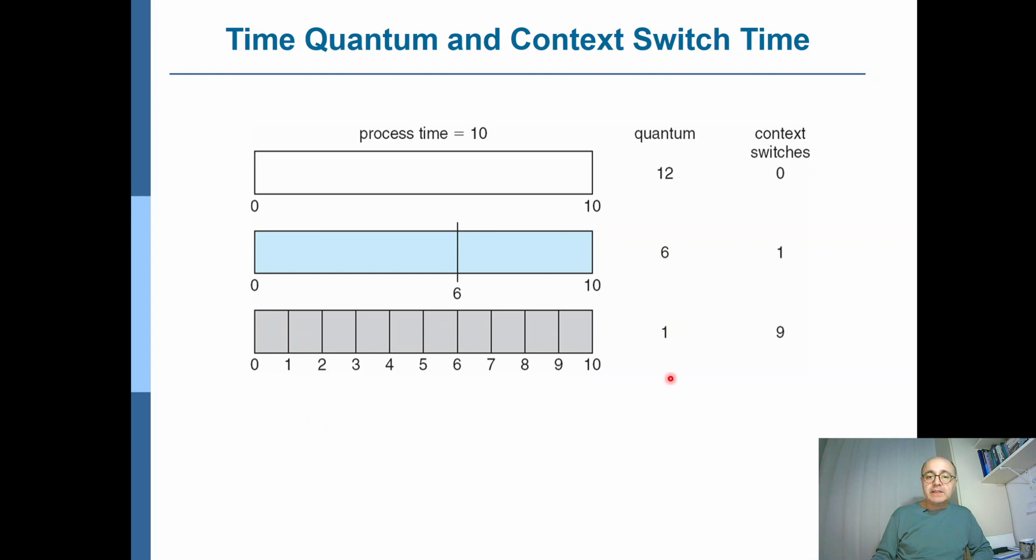If we take the time quantum down to one millisecond, and assuming that there are other processes in the system with context switches, but we're just picking the time quantum given to this process, this process would complete in 10 time quantums. Therefore, we would need nine context switches. So as you can see, as the time quantum gets smaller, the number of context switches gets larger. That's why the context switch should be much smaller compared to the time quantum given to the processes.